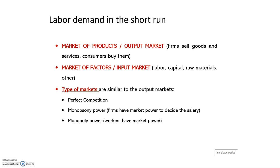We are going to transfer all this knowledge to the market of factors, where the stuff that is exchanged is exactly the factors. So firms will decide to hire more workers — labor — or they could decide to hire more capital, raw materials, or any other factors. But to simplify in this micro course, we are going to focus on labor. The types of markets will be similar to the output markets: perfect competition, monopsonic power, and monopoly power.